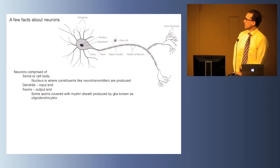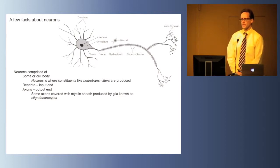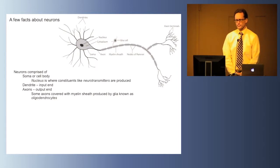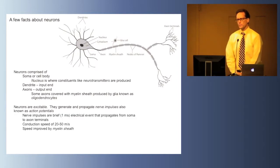The axons of some neurons are covered with a myelin sheath produced by a type of glia known as oligodendrocytes, and this myelin sheath facilitates the transmission of the nerve impulse from the cell body to the end of the axon. Neurons are special because they're excitable, they're irritable, they generate and propagate nerve impulses.